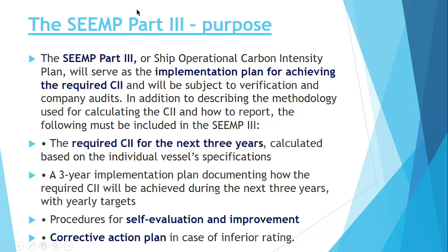CII requires a 3-year cycle plan. It means that in SEEMP Part 3 it is mentioned how you are going to maintain the required CII for the next 3-year period. It should consist of all the methods you need to follow so that your required CII value is maintained for the next 3 years. It is a procedure for self-evaluation and improvement. If you are not able to achieve the required CII, you have to submit a corrective action plan. So simply put, SEEMP Part 3 is an implementation plan for achieving the required CII.